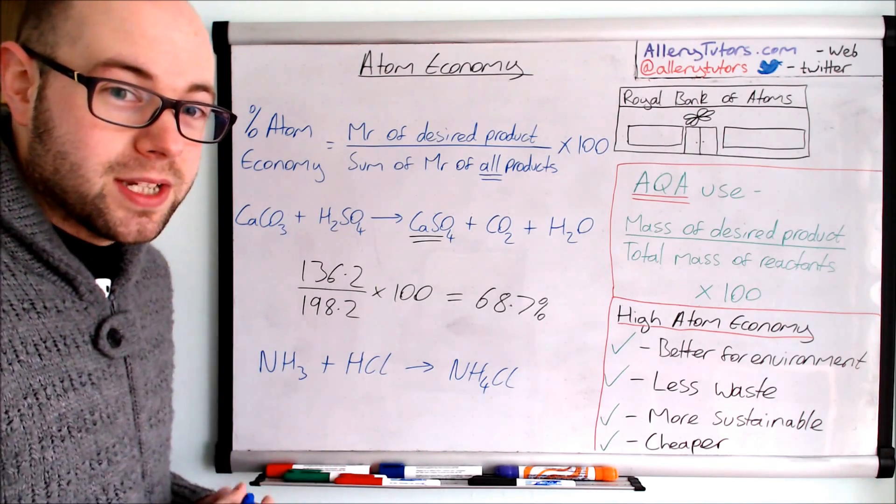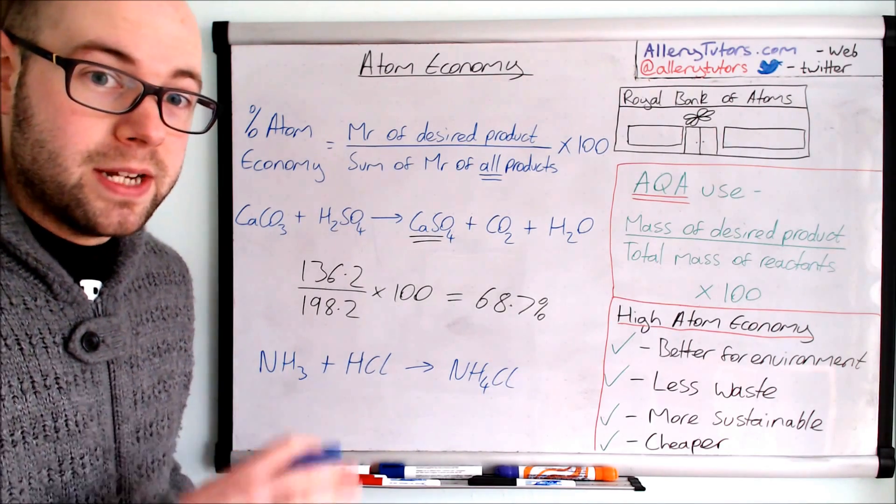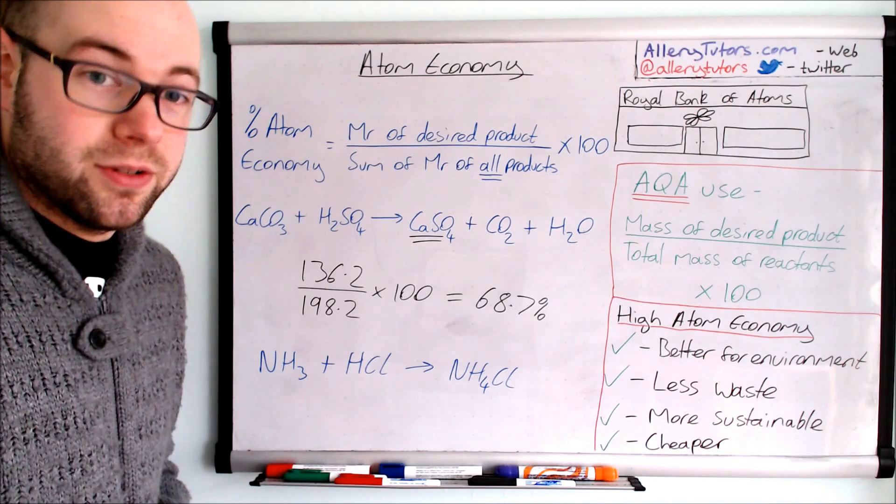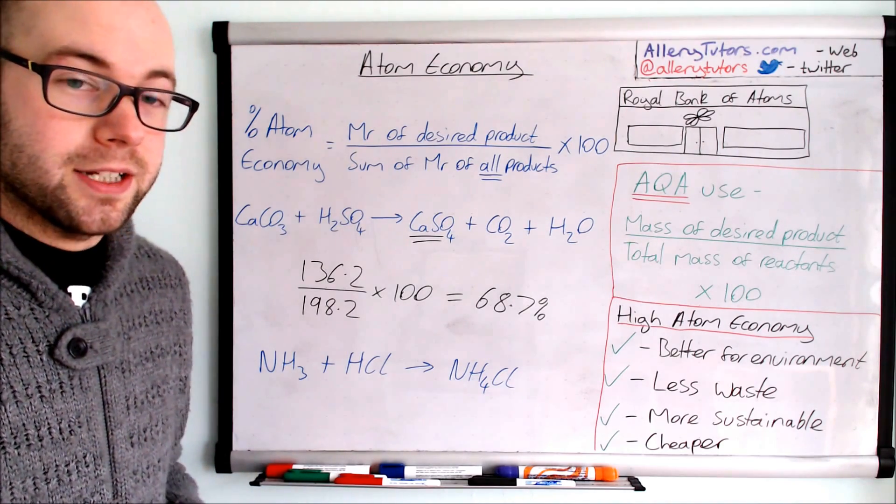You can get some addition reactions as well where you add things on. For example alkenes adding bromine to alkene is also an example of an addition reaction and so therefore would be 100% atom economy.